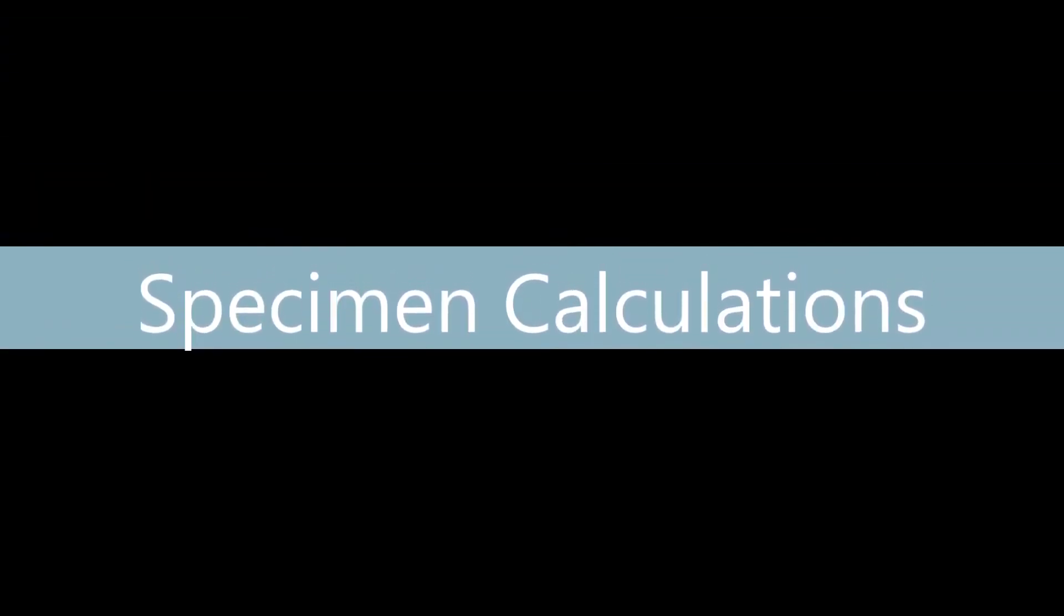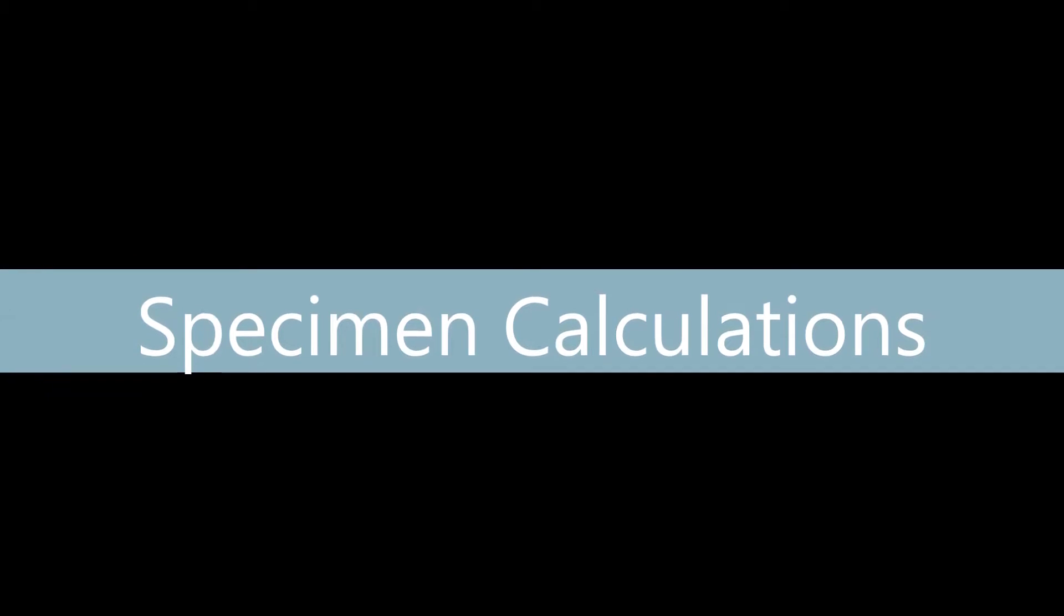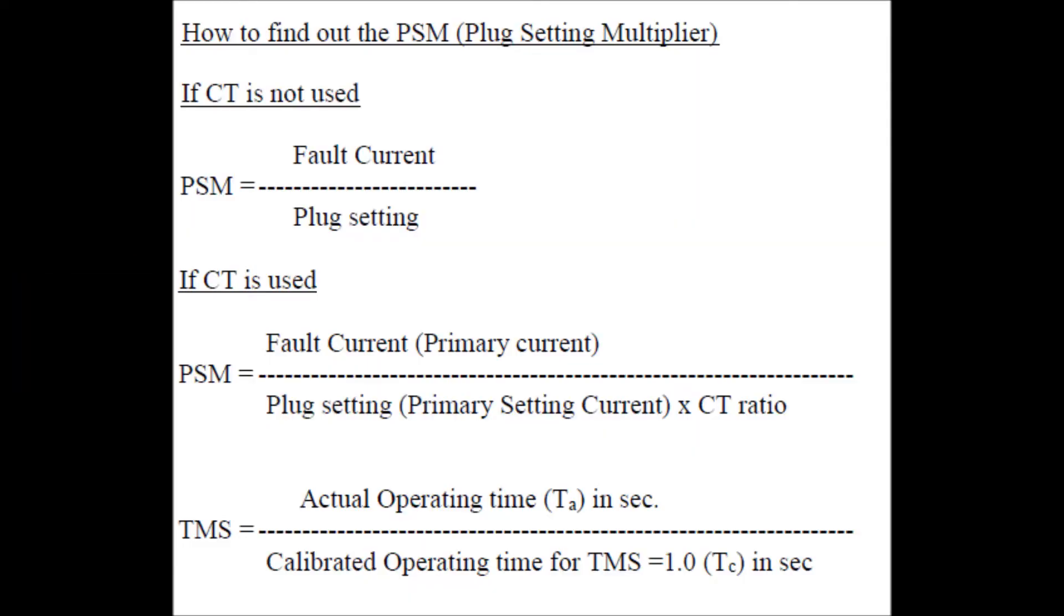Let us see what is the specimen calculation formula here which is required to conduct the experiment. Plug setting multiplier is the main formula which is fault current divided by plug setting. Plug setting we have kept it to 1 amp at fault.